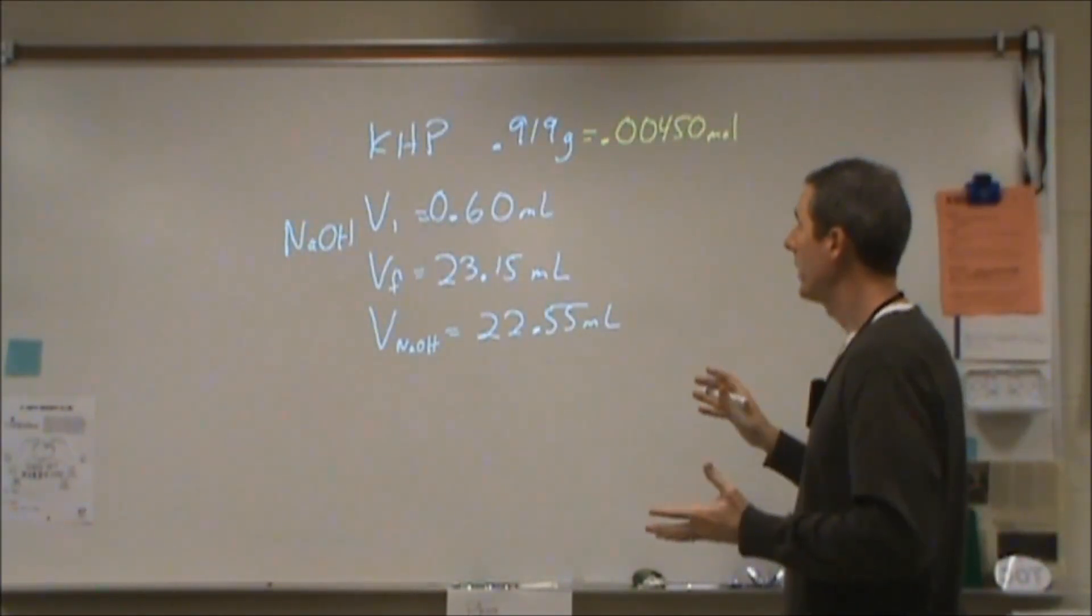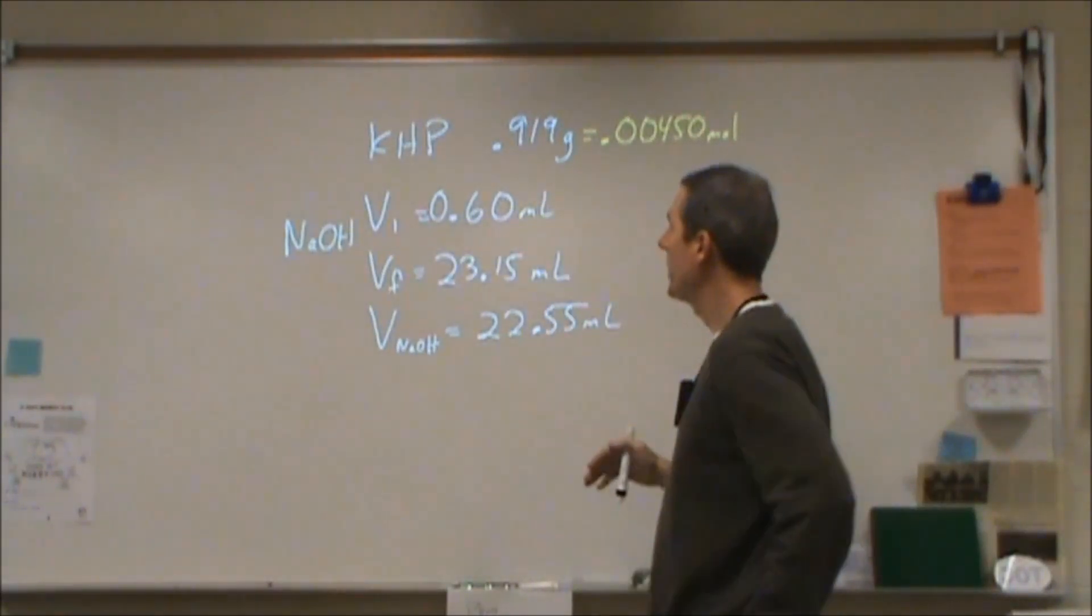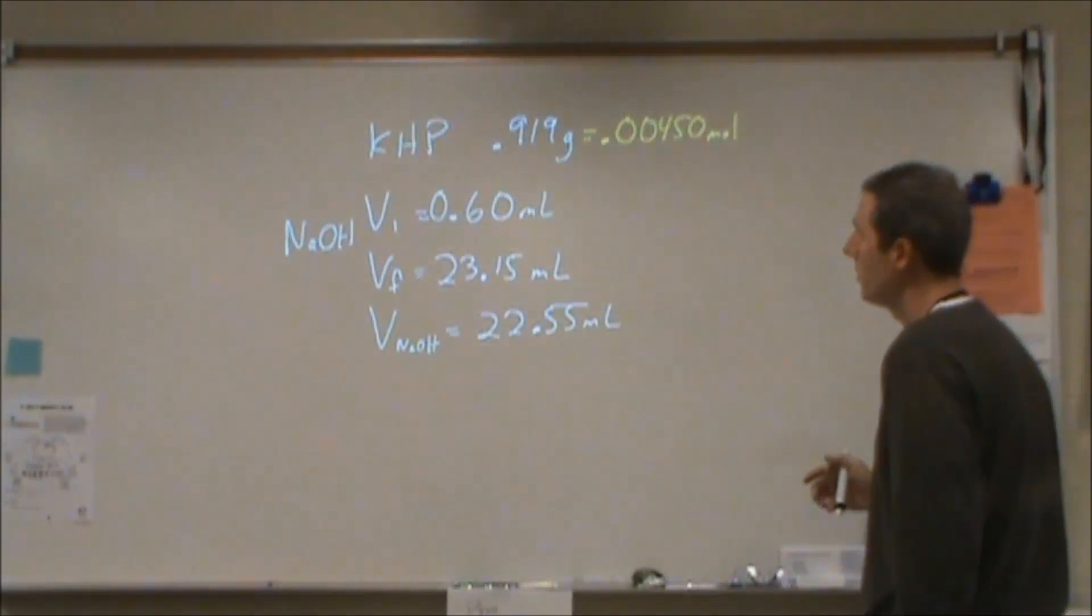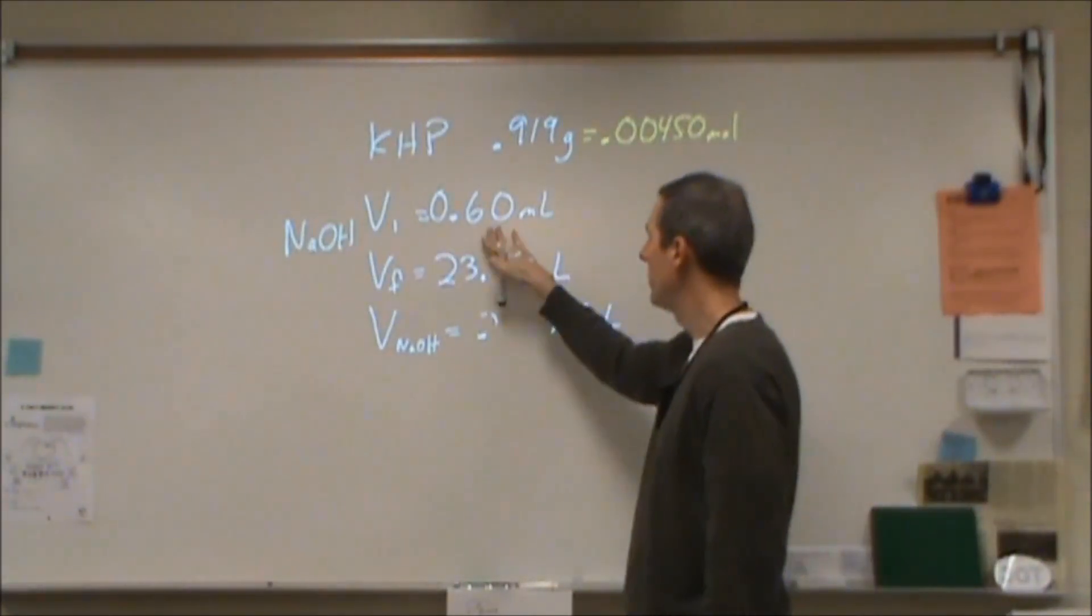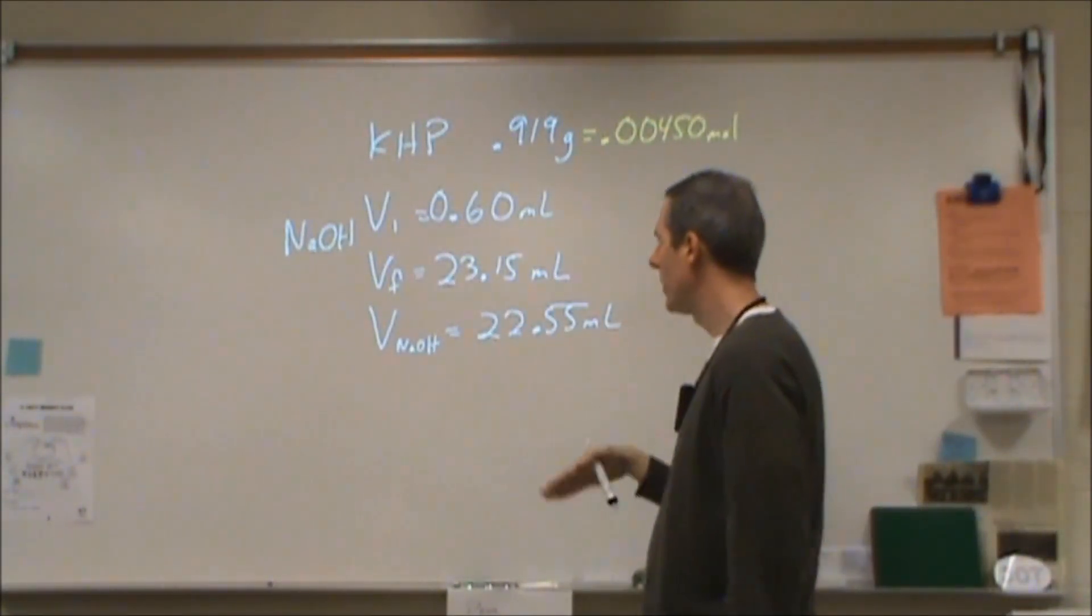So now we can subtract that from our initial volume and figure out what our amounts are. So here are kind of the stats I've collected. I know the mass of KHP, potassium hydrogen phthalate that I used. I know the initial volume of sodium hydroxide and the final volume.